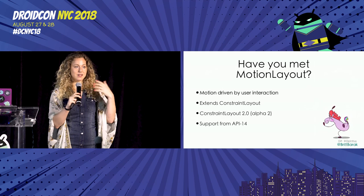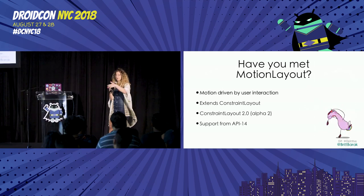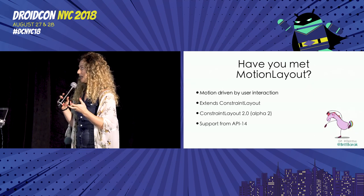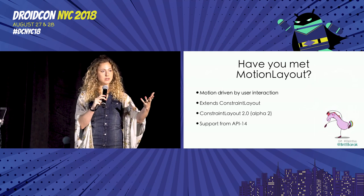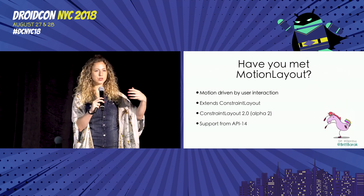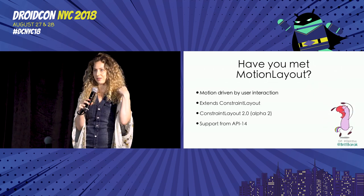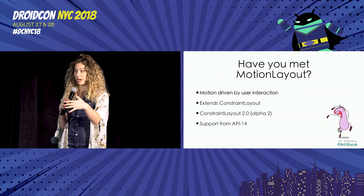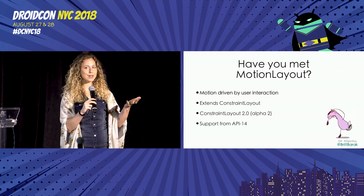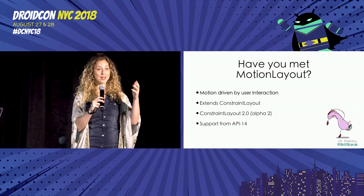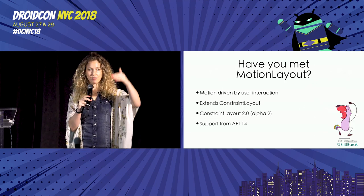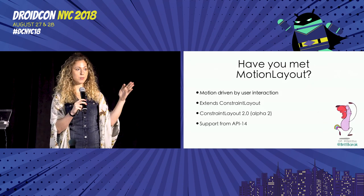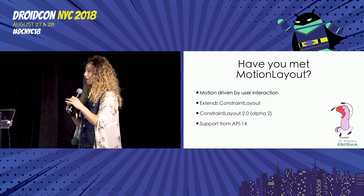Motion Layout extends ConstraintLayout, so it's a layout and everything you know about ConstraintLayout applies here — it just adds motion capabilities. It's designed for motions that the user drives, handling user interactions like clicks and swipes, animating the layout according to those interactions. The cool thing is it does a lot of magic behind the hood — calculations for each frame, so every frame is controlled according to the user's swipe or click.